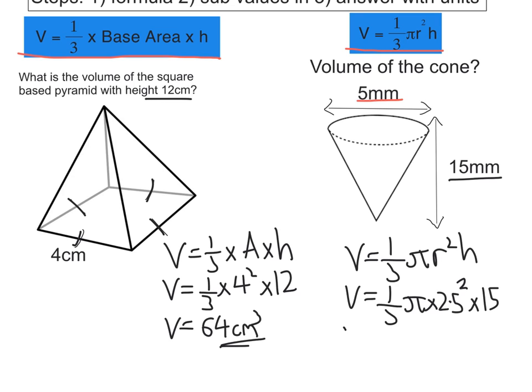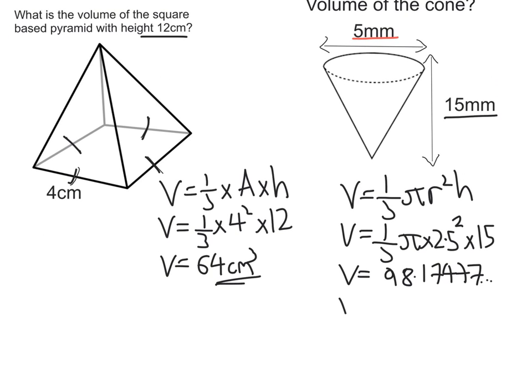Now put that into the calculator, you're going to get 98.17477, et cetera. And putting that to three significant figures, you're going to get 98.2 millimetres cubed.